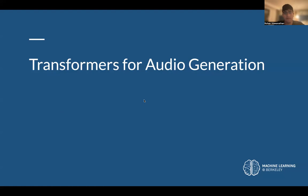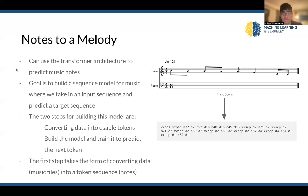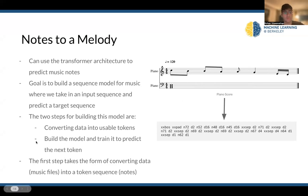We're going to transition now into transformers for audio generation. How can we use transformers to predict the next note? We're going to go through this by looking at considerations from image transformers and NLP transformers. Our goal is to build a sequence model for music where we take an input sequence and predict a given target sequence. The two steps are: convert our data into usable tokens — which provides a different issue in music than for image and text — and then build the model and train it to predict the next token.